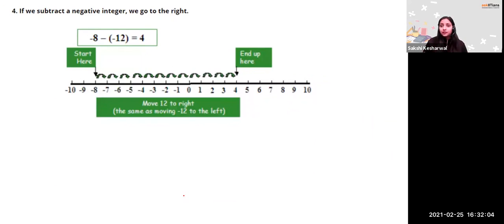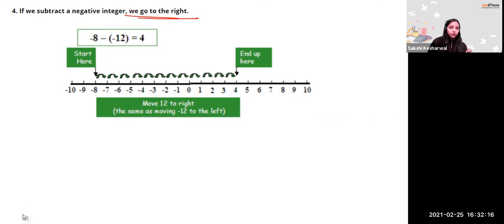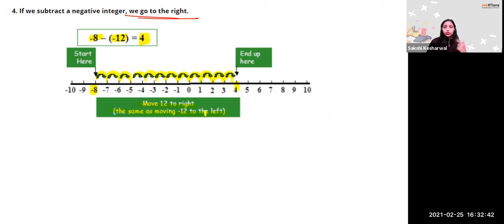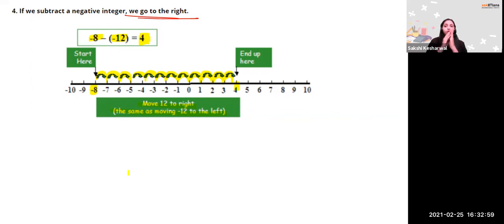When subtracting a negative integer, you move right — the opposite of adding a negative number. For example: minus 8 minus minus 2. Start at minus 8, move 12 steps to the right — you reach 4. So remember: adding positive → move right; subtracting positive → move left; adding negative → move left; subtracting negative → move right. It works in vice versa.